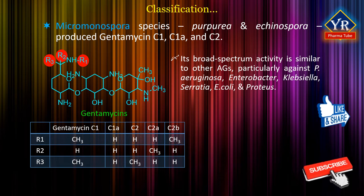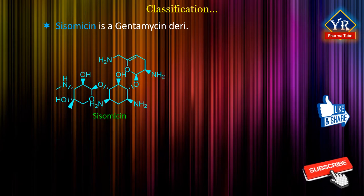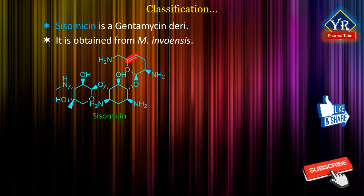Of particular interest is its high activity against bacteria such as Pseudomonas aeruginosa, Enterobacter, Klebsiella, Serratia, E. coli and Proteus. The drug is also synergistic with penicillins. Sisomycin is a gentamicin analog. It differs in having an unusual unsaturated amino sugar. It is obtained from Micromonospora invoensis and is similar to gentamicin in pharmacology and spectrum of activity.